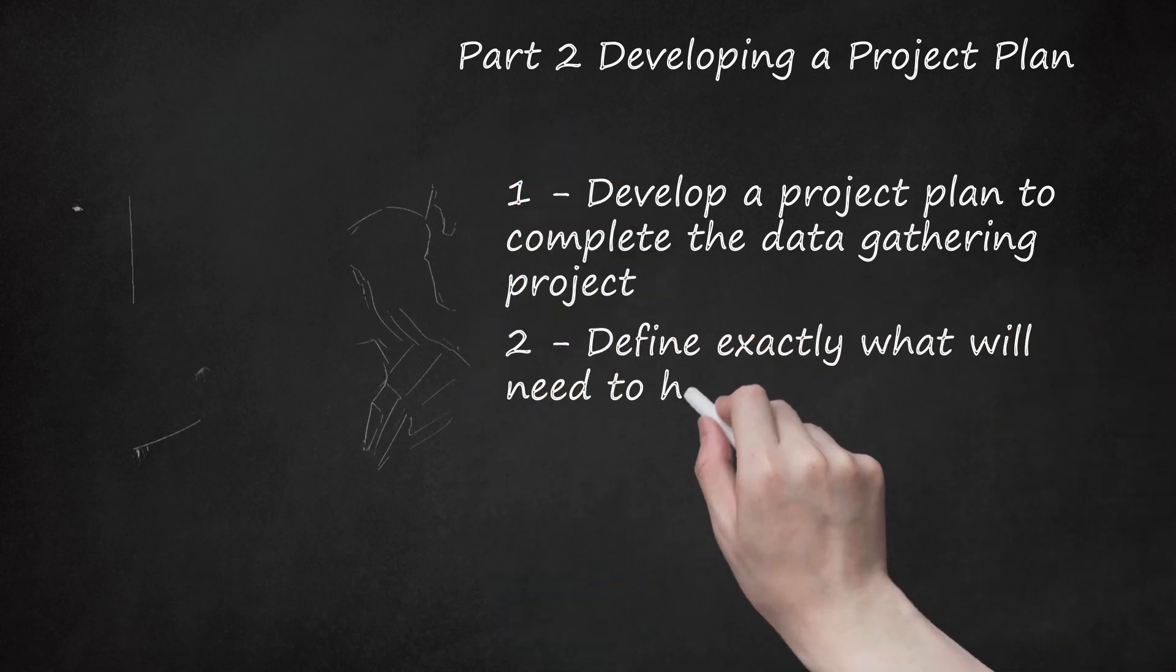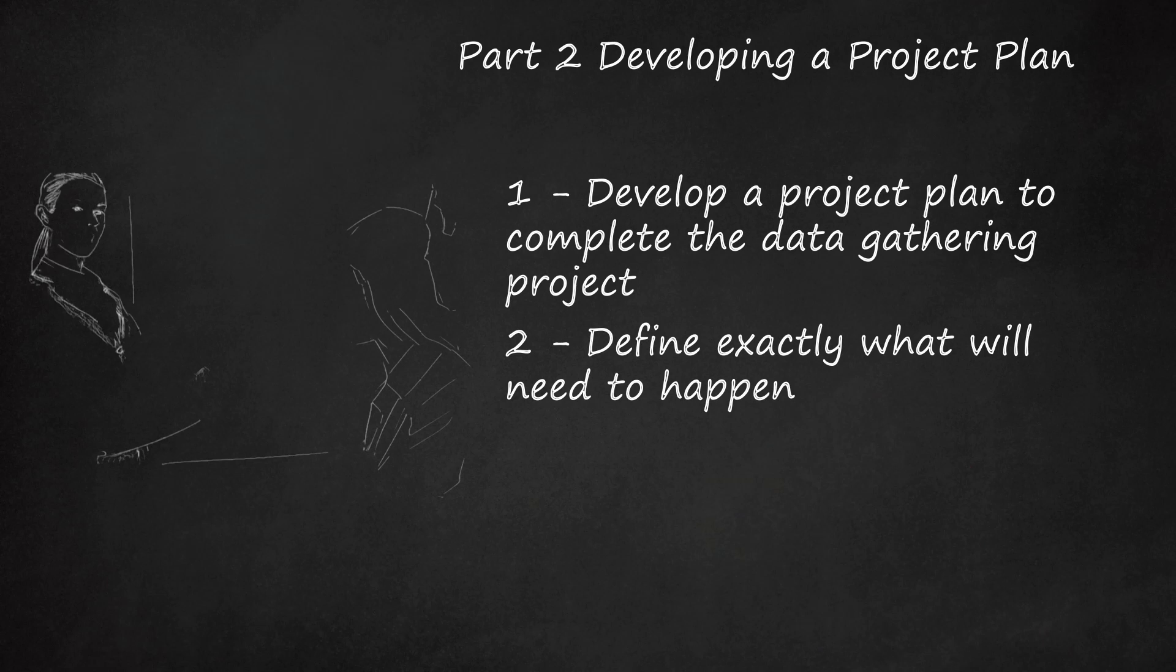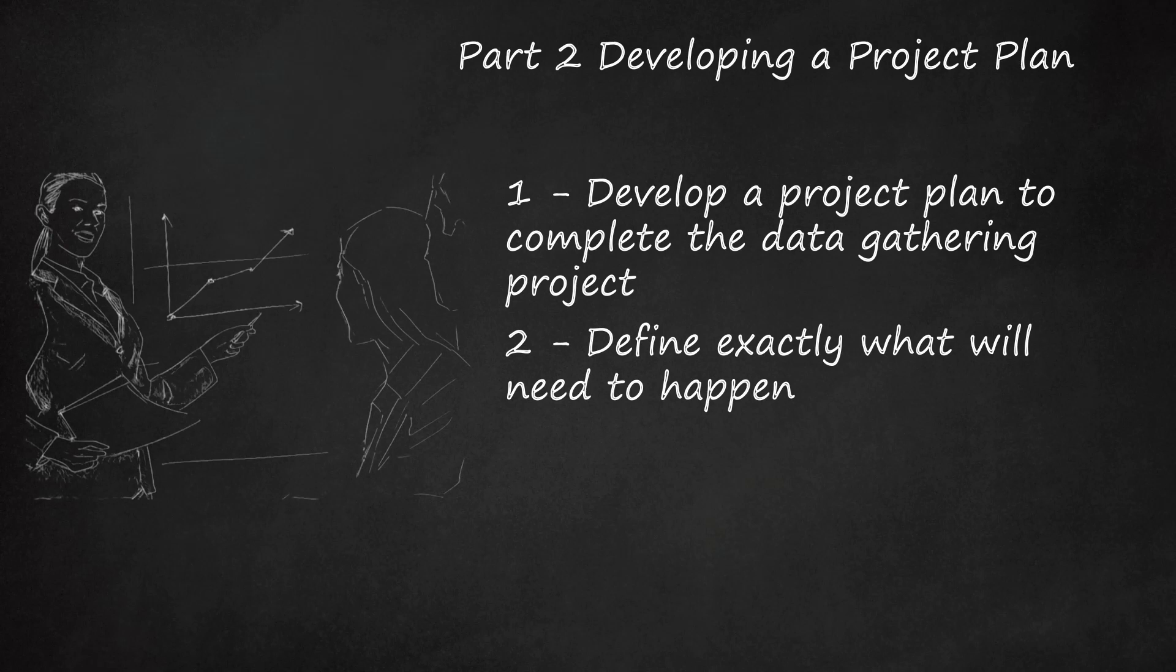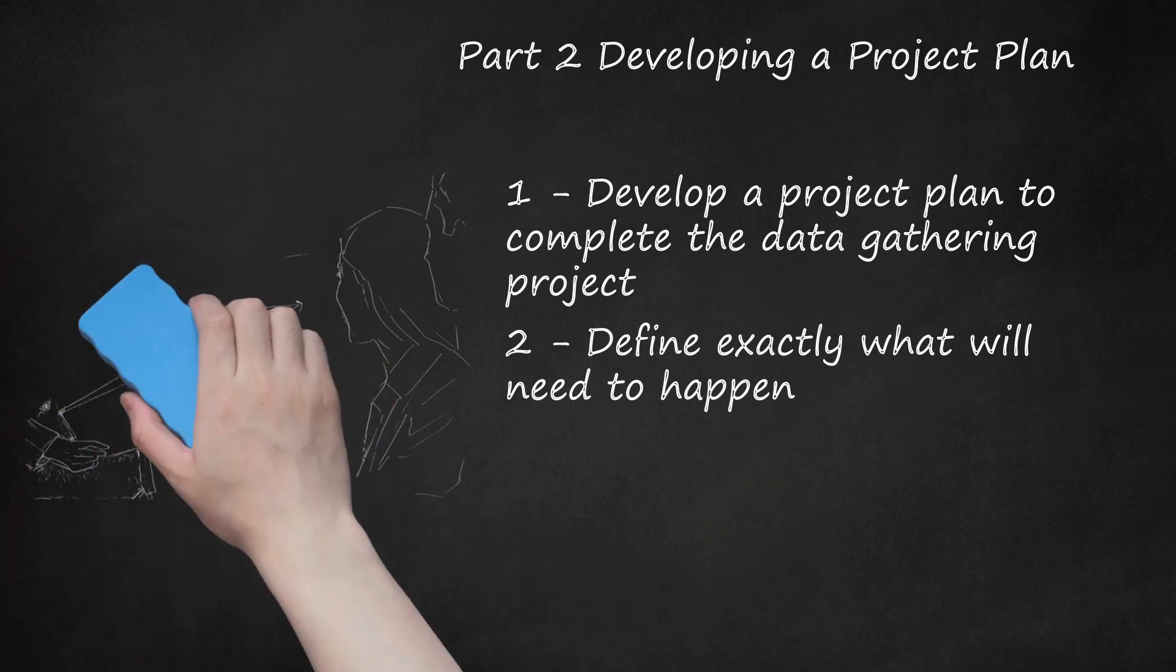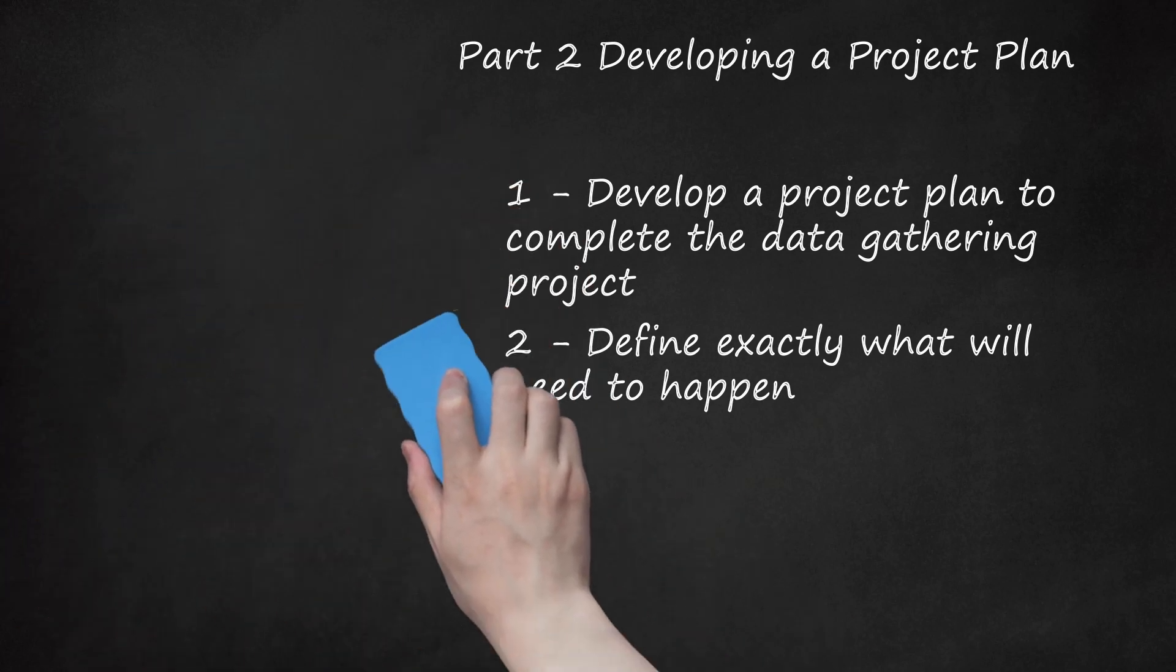Step 2: Define Exactly What Will Need to Happen. To bring about this project, you will need to define what exactly the company needs to do. For example, if the problem is that costs of a product are too high, the areas covered will include purchasing, production, packaging, shipping, and accounting, among others, to determine the current and past trends in costs of materials, production cycles, and cost.